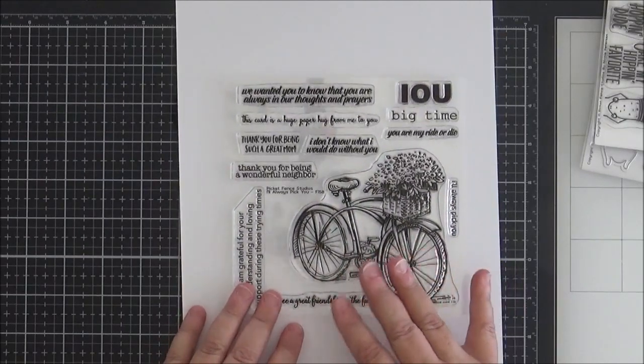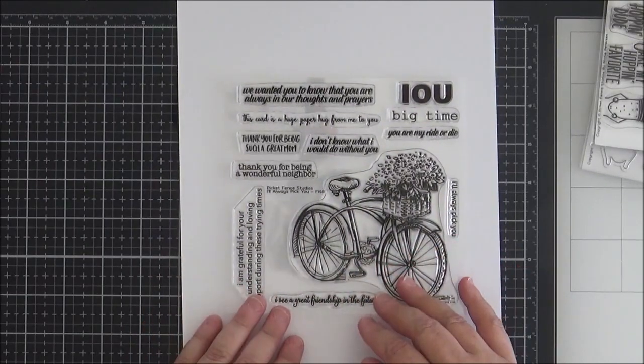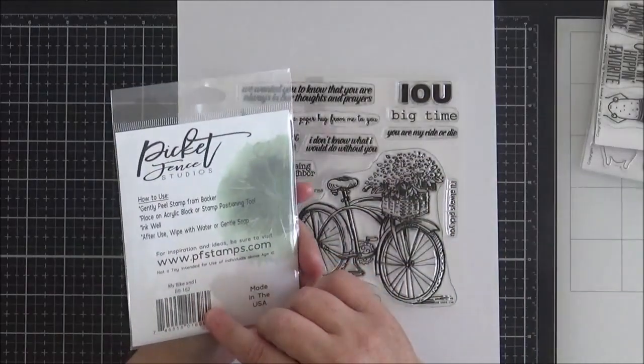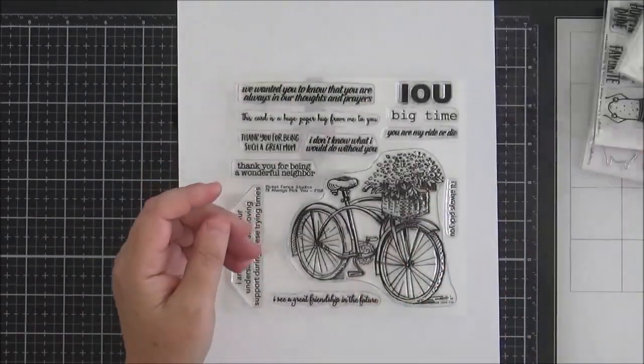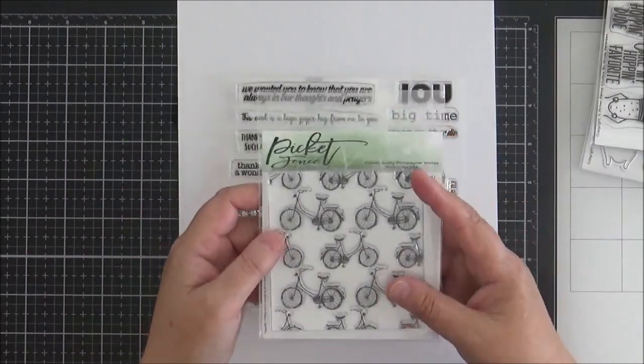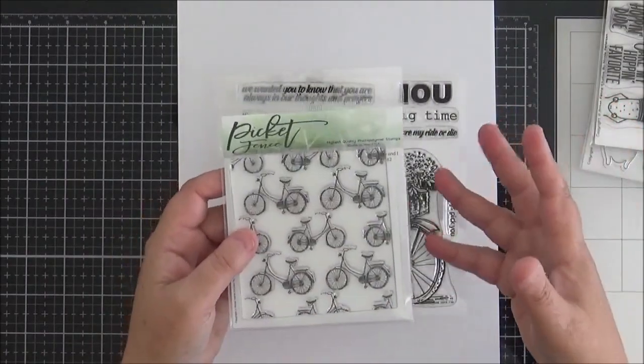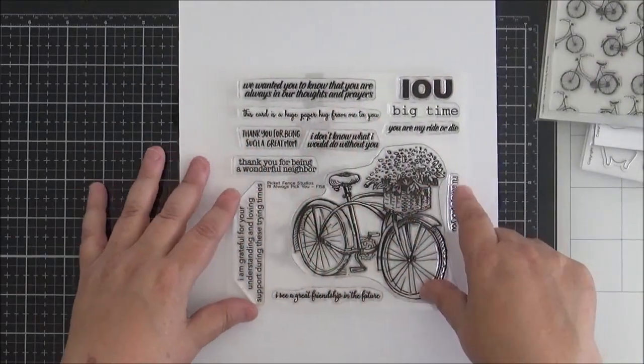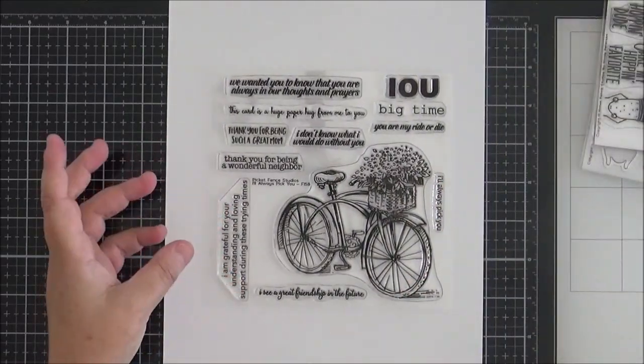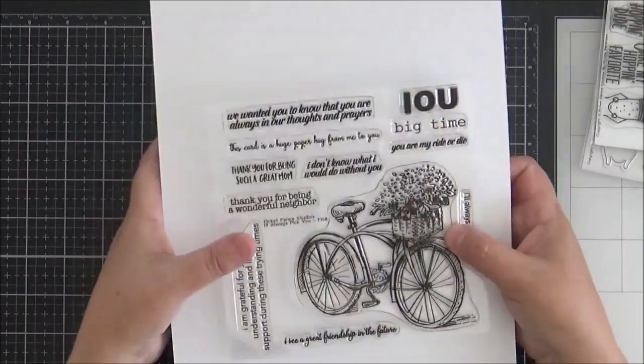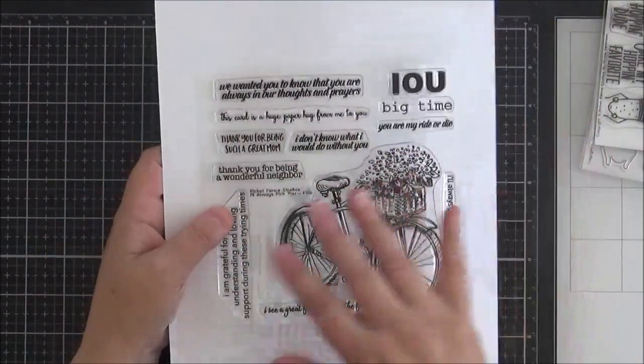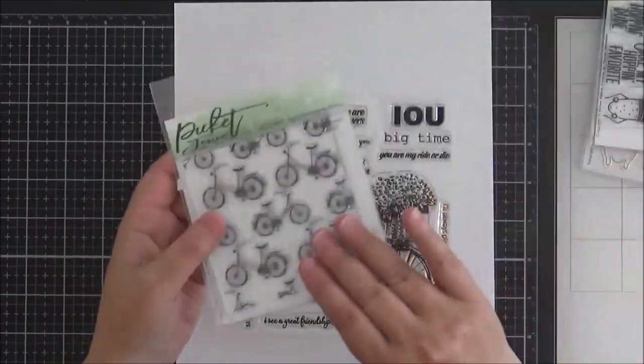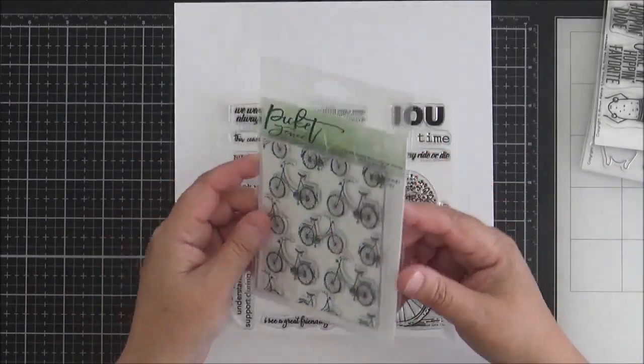Such a beautiful image. Looks great. Just stamped and a clean and simple card. You don't need anything other than that image, although you can pair it beautifully with the seamless stamp, which is called My Bike and I. So that is another one of that range of stamps that Picket Fence bring out that allow you to create a repeat stamped background. But this one here, you have got lots of different sentiments that you can use along with it to personalize your card. You've got I owe you big time. You are my ride or die. I don't know what I would do without you. So lots of different options there to create a card for someone special. And as I say, you can also pair that with the bike background too.